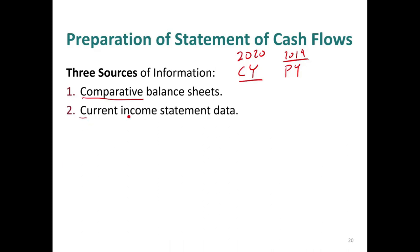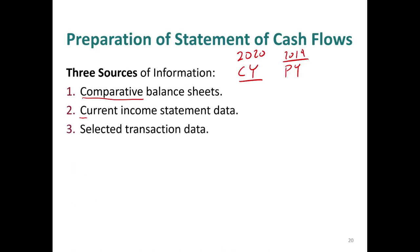Two, the current year income statement. For the income statement, you only need the 2020 income statement — you only need one current income statement. And you will need selected transaction data, simply put, additional information. You need more information — any information that's not captured in the balance sheet or income statement.